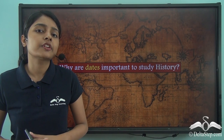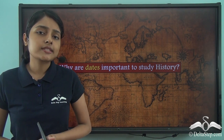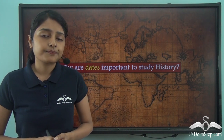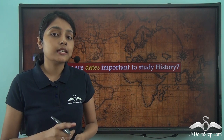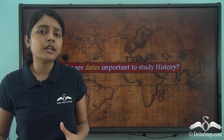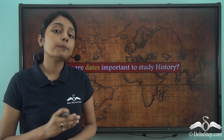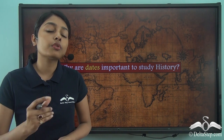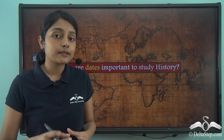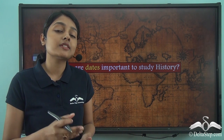Dates also help us in the study of history in another way — they help us situate different events in a chronological order. For example, events such as India attaining independence, the Britishers coming to the Indian subcontinent, and the Mughal Empire establishing itself — if told in a random and haphazard way, you would not understand the proper context. For better understanding, you need to know the chronology or the time frame. You need to know that, for example, the Britishers came to the Indian subcontinent prior to establishing their rule over the country.